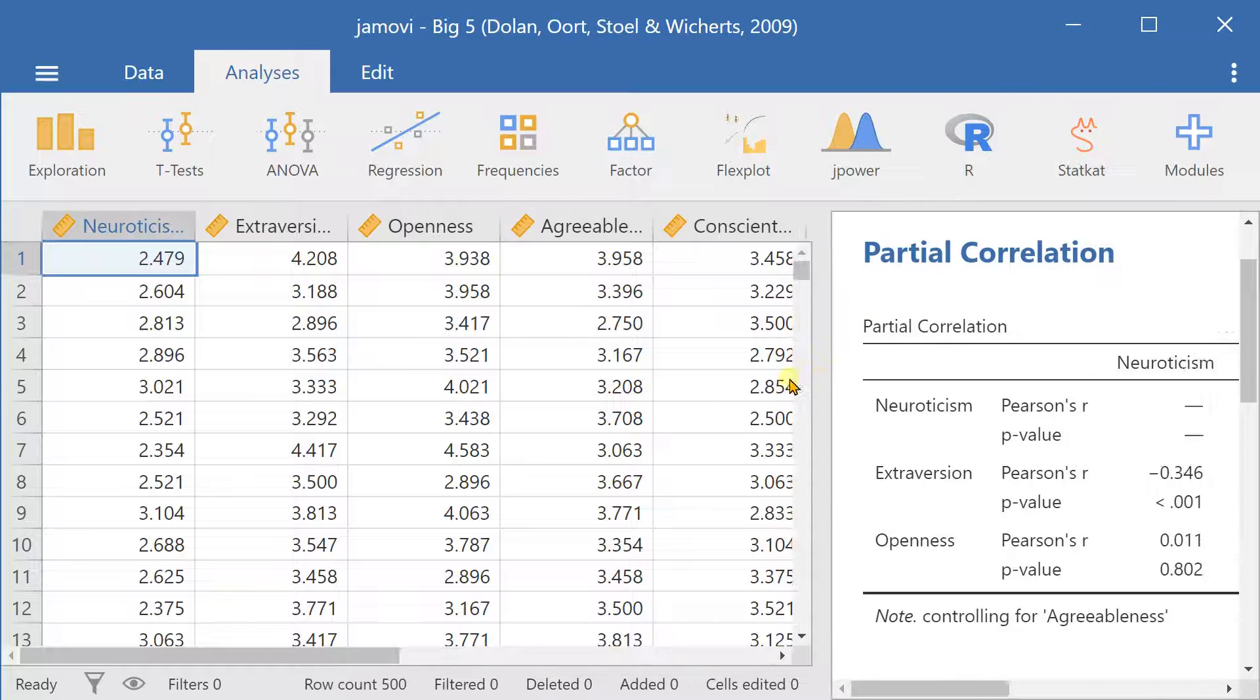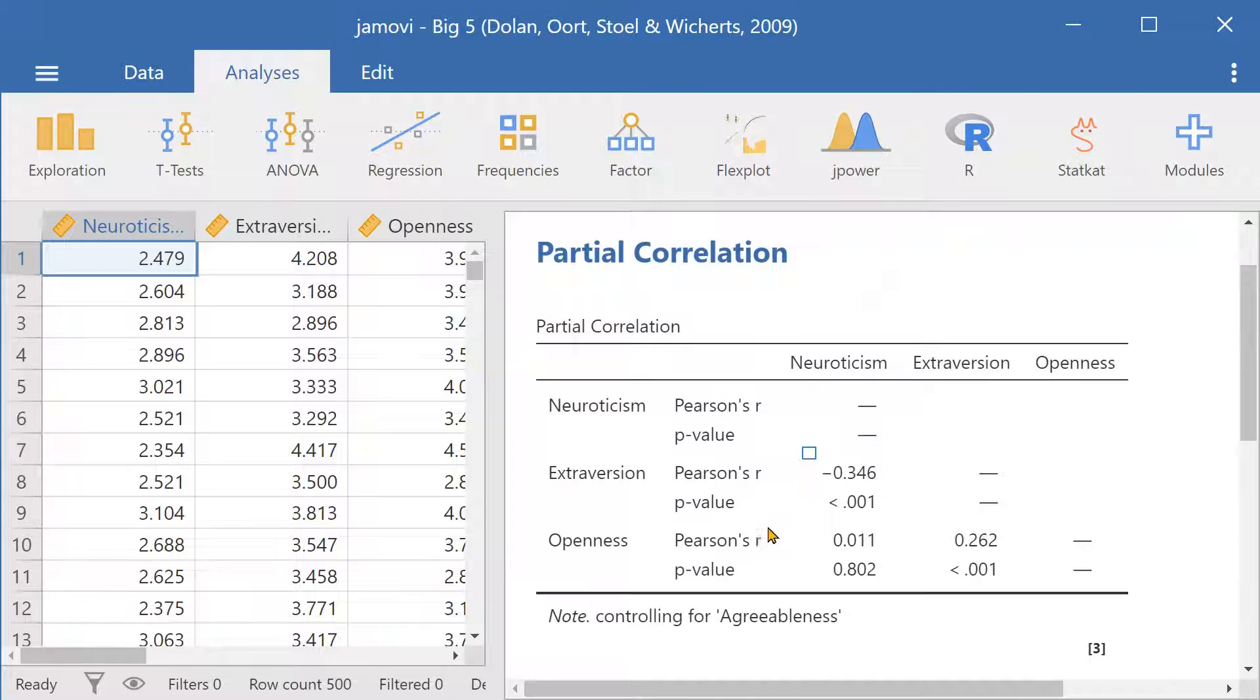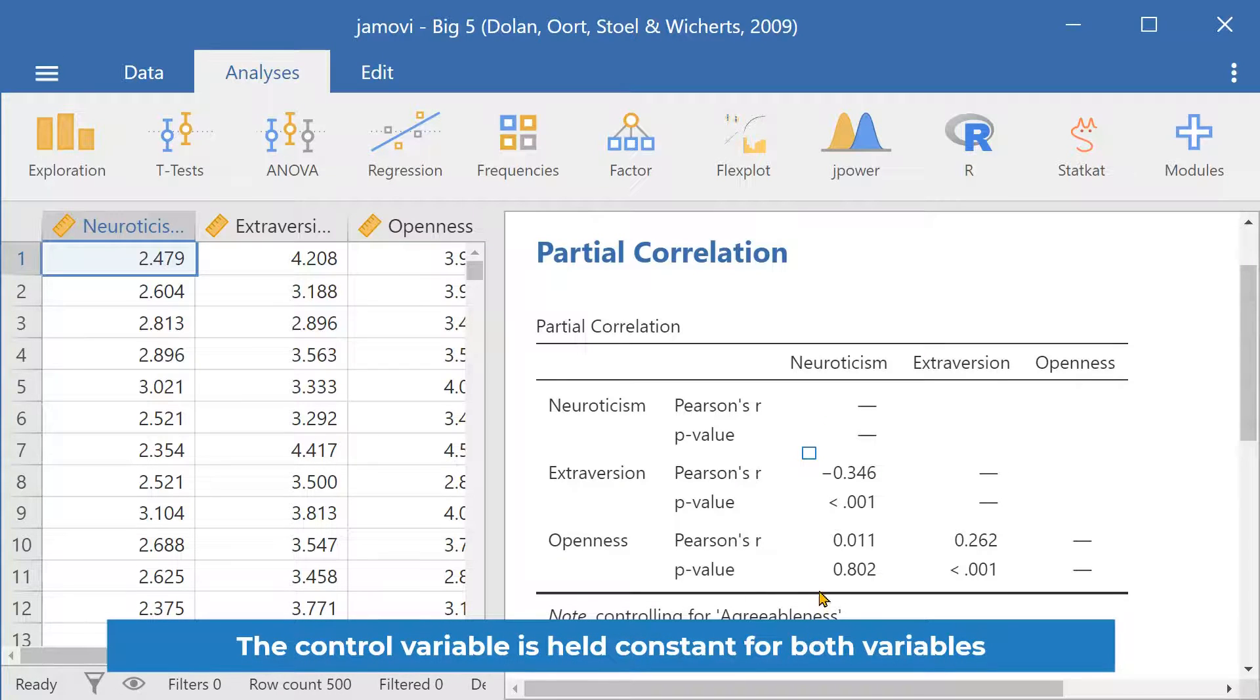Let's close this window. And here we have our results. We can see that the control variable is agreeableness and is held constant for all of the analyses here.